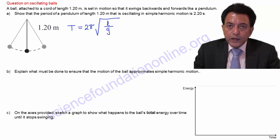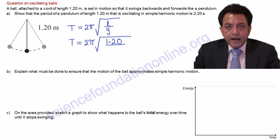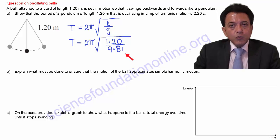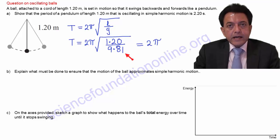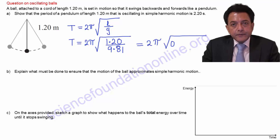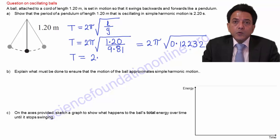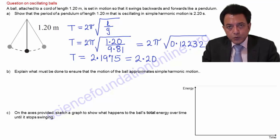So when substituted, T equals 2 times π times square root of 1.20 divided by 9.81, which is the value of g in SI units. This works out to give the period T as 2.1975. When rounded to three significant figures, this is 2.20 seconds.